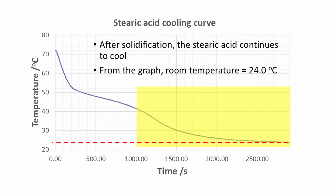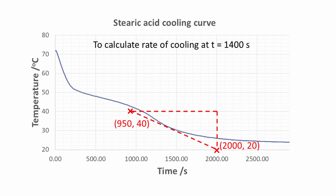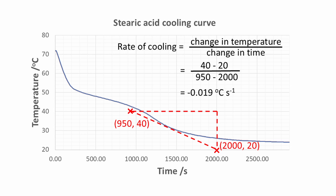After the stearic acid solidifies, it begins to cool again until it reaches room temperature. When the substance reaches 24.0 degrees Celsius, no further cooling occurs. From this, we can conclude that the room temperature is 24.0 degrees Celsius. We can calculate the rate of cooling after solidification has taken place by using another tangent. I have chosen a time of 1,400 seconds and annotated the graph in red. Rate of cooling is equal to change in temperature divided by change in time. The rate of cooling at this point works out to be minus 0.019 degrees Celsius per second.